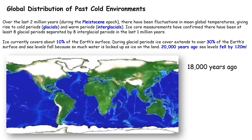If we look at the past, the distribution of cold environments has varied. Over the last two million years, or during the Pleistocene epoch — specifically from 1.8 million years ago until about 11,700 years ago — there have been huge fluctuations in temperatures giving rise to cold periods or glacials and warm periods known as interglacials. It's been estimated there have been about eight interglacial periods and eight glacial periods in the last one million years.